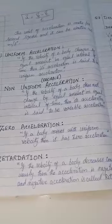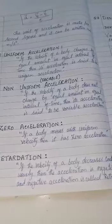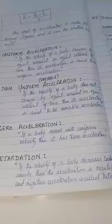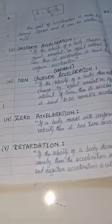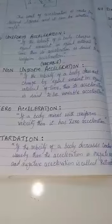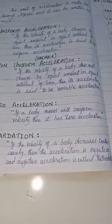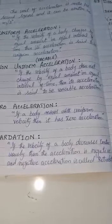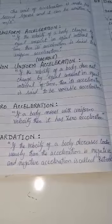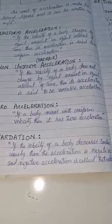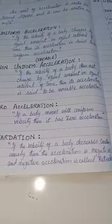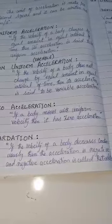Number 4: Zero acceleration. If a body moves with uniform velocity, then it has zero acceleration. Number 5: Retardation. If the velocity of a body decreases continuously, then the acceleration is negative, and this negative acceleration is called retardation.